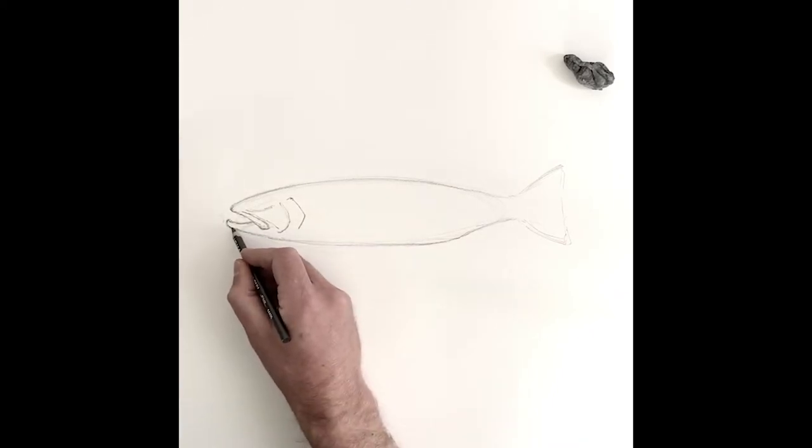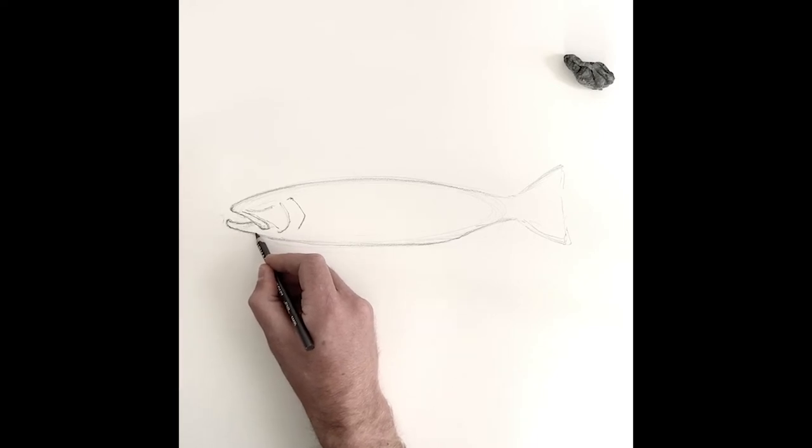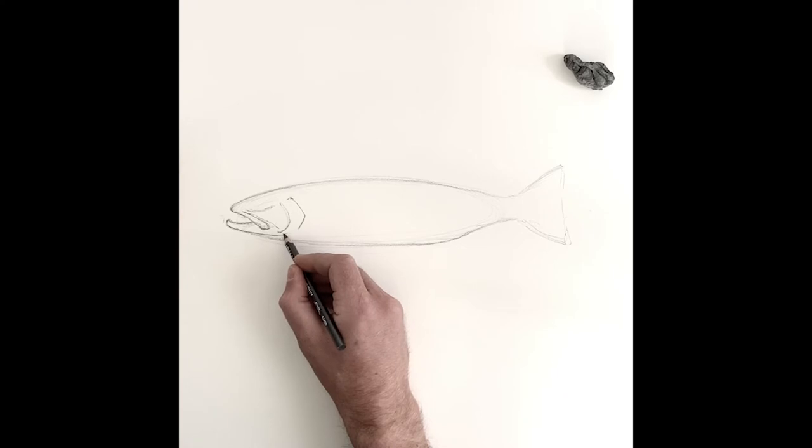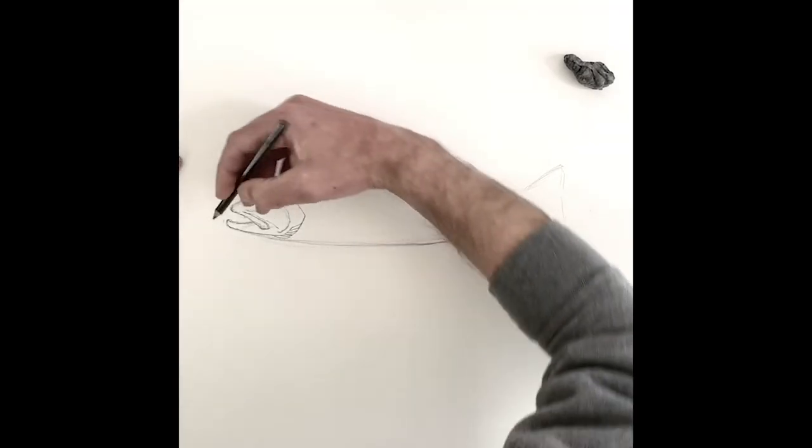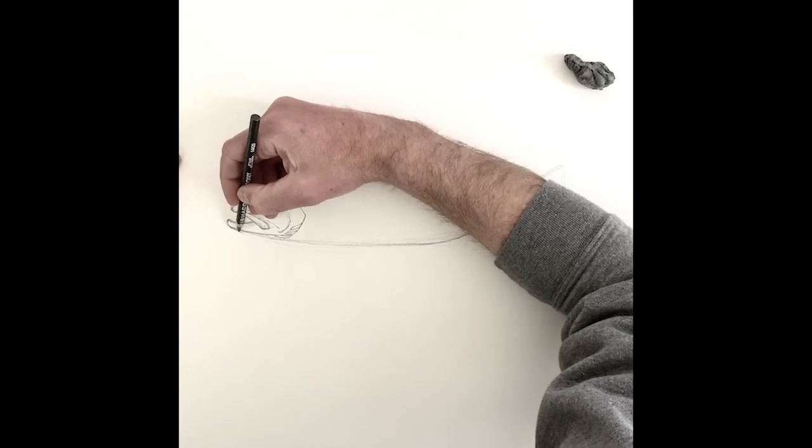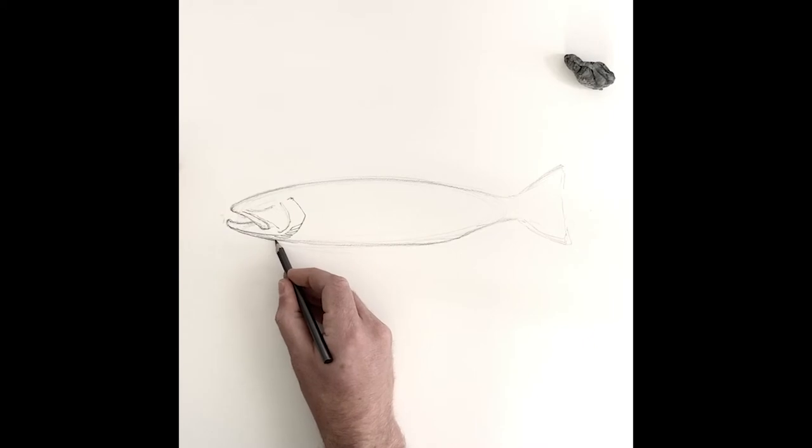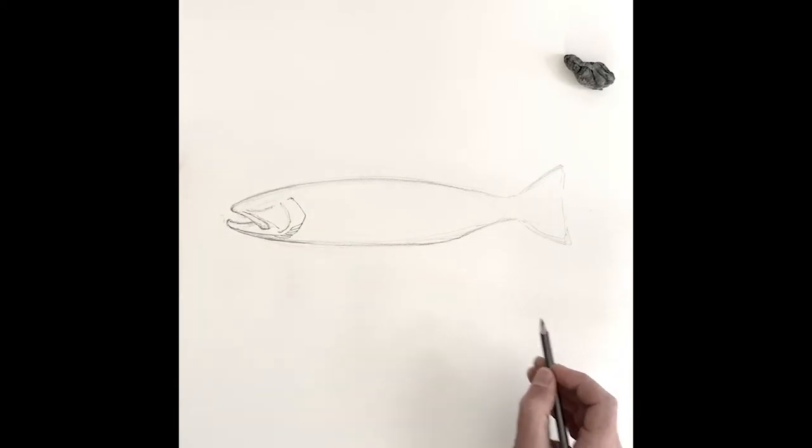And then the main gill plate is going to be back behind here. And then what I'm going to do is cut a line here above the bottom of the fish coming up to this back gill plate. And this is going to give me some of that bottom gill structure, and then we can cut that bottom line in underneath.